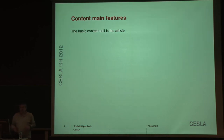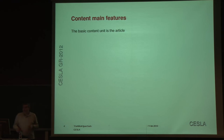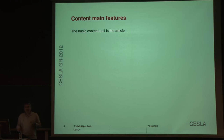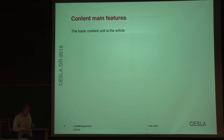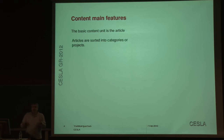The basic content is the article. It is very simple to write an article. You only have to use the searching tool — write the title of the article in the box and push the Go button. You will go directly to the article if it exists. If the article doesn't exist, the system will propose you to create a new one with the name that you have entered in the search engine. Very easy.